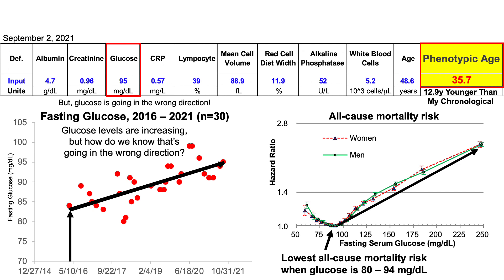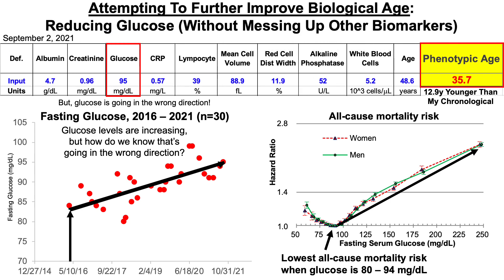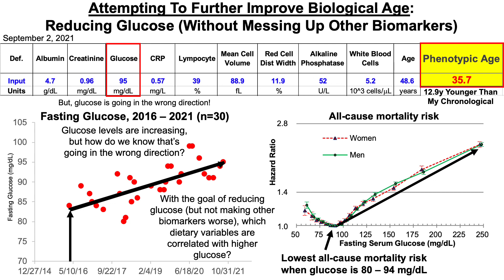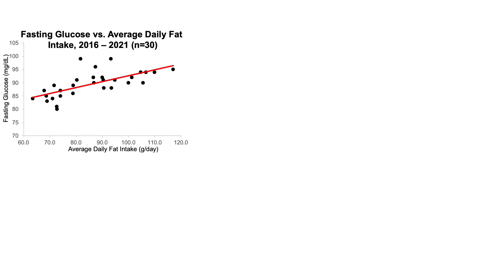I've had values within the last six years of about 85, so the goal is to get back to that. The focus of this video is going to involve my attempt to further improve biological age, in part by reducing glucose. It's important to mention that the plan is to not mess up other biomarkers. So with that in mind, which dietary variables are correlated with higher glucose while not making other biomarkers worse?